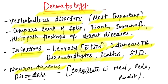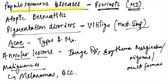Neurocutaneous disorders should be correlated with medicine, pediatrics, and radiology — this cross-subject correlation helps retain facts from all subjects. For papulosquamous diseases, psoriasis is most important; know the new drug apremilast and clinical trial data. Also revise atopic dermatitis in the last minute.